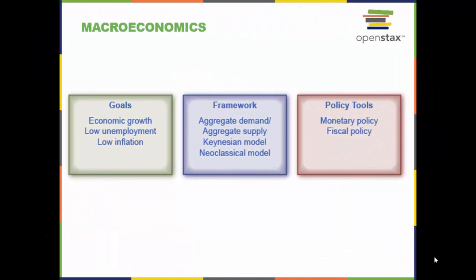This chart shows what macroeconomics is about. The box on the left indicates a consensus of what are the most important goals for the macro economy. The middle box lists the frameworks economists use to analyze macroeconomic changes such as inflation or recession, and the box on the right indicates the two tools the federal government uses to influence the macroeconomy.